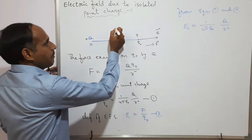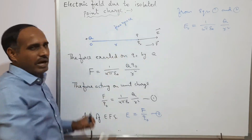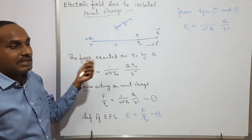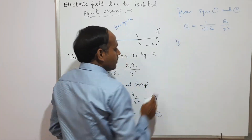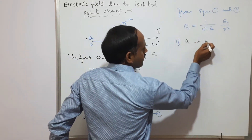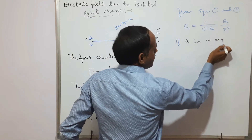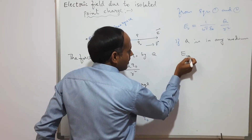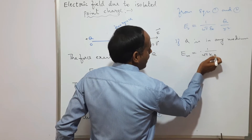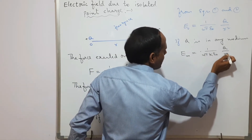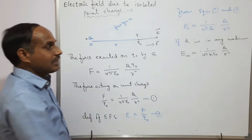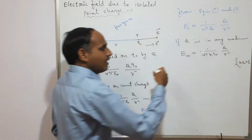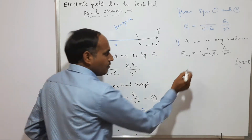Here, ε is the permittivity of free space — that is, air or vacuum. If the charge q is placed in a medium, we can write the electric field strength in that medium as E = (1/4πkε) × q / r², where k is the dielectric constant of that medium. We know that k × ε equals ε of the medium, as discussed in previous videos.